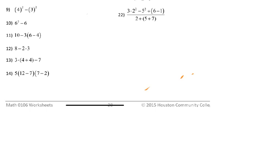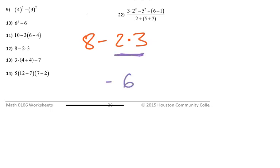Number twelve is 8 minus 2 times 3. PEMDAS says do multiplication first: 2 times 3 is 6. So 8 minus 6 is 2.